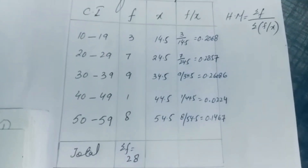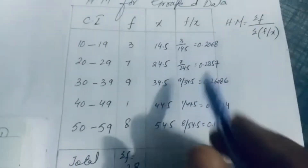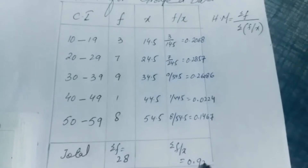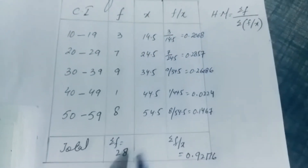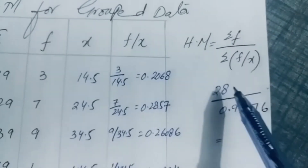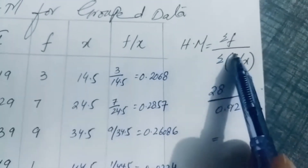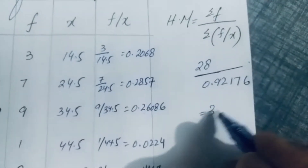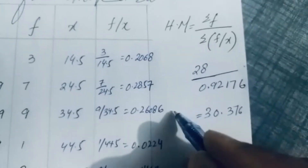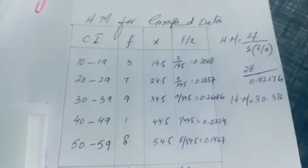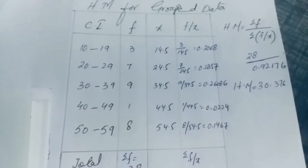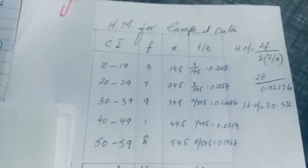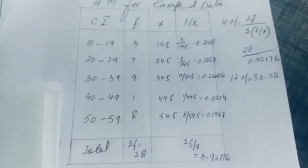We need summation f equals 28 and summation f upon x equals 0.92176. Putting these values into the formula: 28 divided by 0.92176 gives 30.376, which is the harmonic mean. This is the complete solution. If you have any questions, feel free to ask.